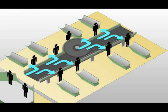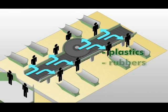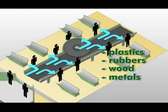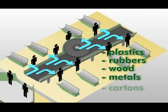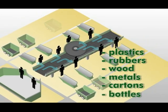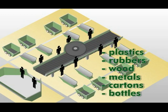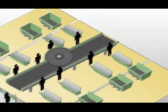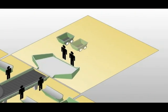that segregate recyclable wastage such as plastics, rubbers, wood, metals through an optional rotating magnetic platform, cartons, bottles, and several other items through chutes that lead to their corresponding waste bins.